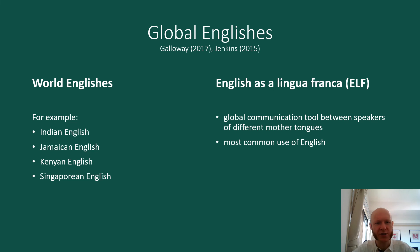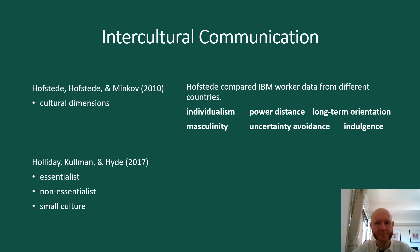From Global Englishes, there could be more lessons on different varieties of English — for example, Indian English, Jamaican English, Kenyan English, or other varieties from around the world. There could also be lessons about English as a lingua franca. From Intercultural Communication, there could be lessons on the other cultural dimensions such as power distance, long-term orientation, masculinity, uncertainty avoidance and indulgence. It would also be important to cover the difference between an essentialist and non-essentialist view of culture, as well as small culture.